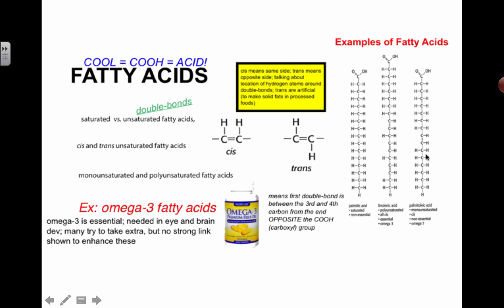These different types of fatty acids are important for health. You might have heard of something called omega-3 fatty acids — people sell them in little pill boxes, and a lot of people take them. We know they're essential, meaning we must include them in our diet. A lot of fish oils contain omega-3s. But there's not really strong evidence that taking extra omega-3 pills will enhance brain development and eye function. Nevertheless, if you're not a strong fish eater, taking some pills may be an alternative.